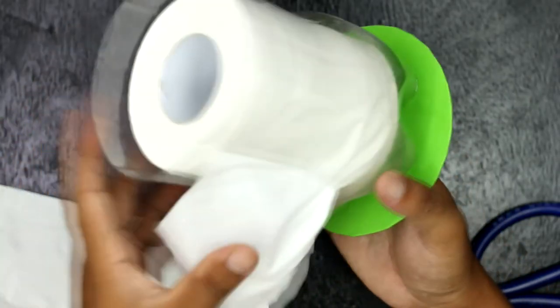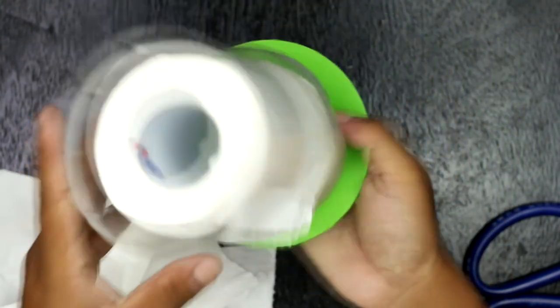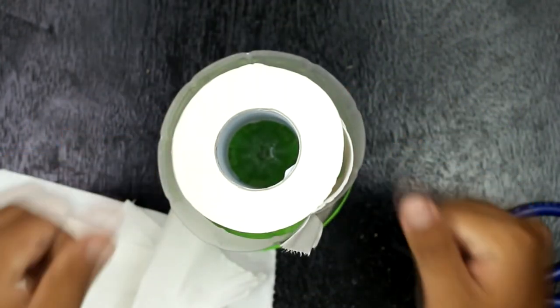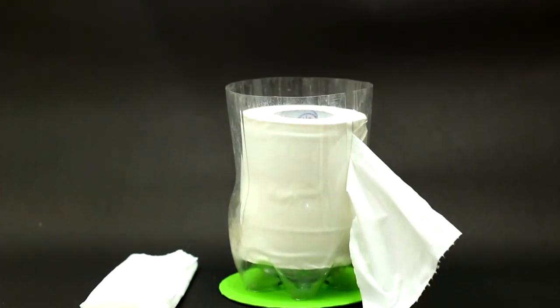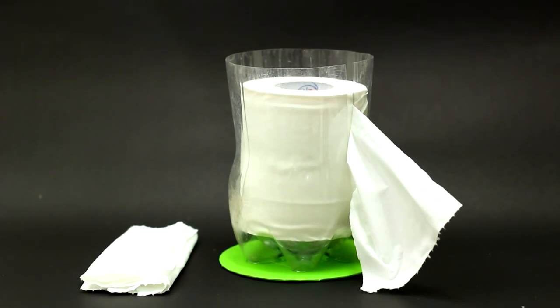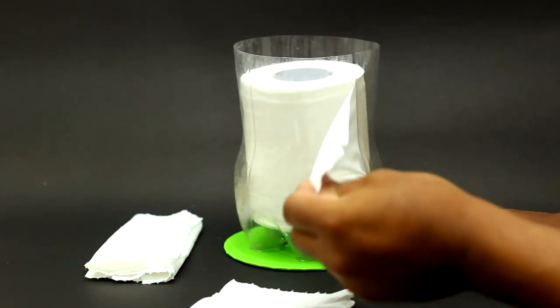Finally, our toilet paper stand is ready to use. This waste material recycle project is completed. Hope you like this reuse and recycle DIY project. If you like to see similar DIY projects in the future, then don't forget to subscribe to our channel and hit the like button. Thank you for viewing this DIY project. Have a nice day, bye bye.